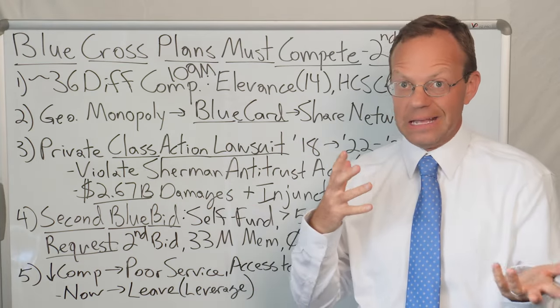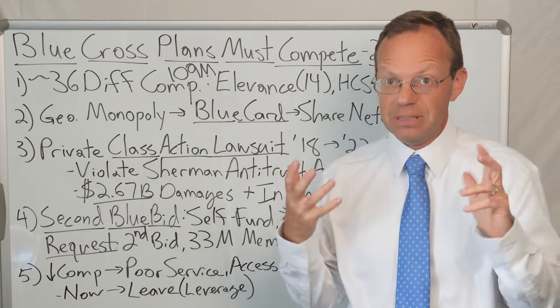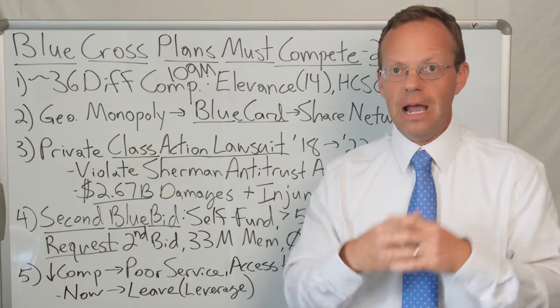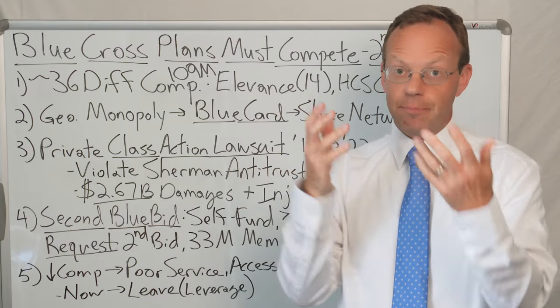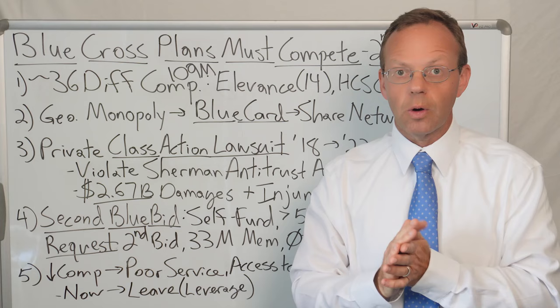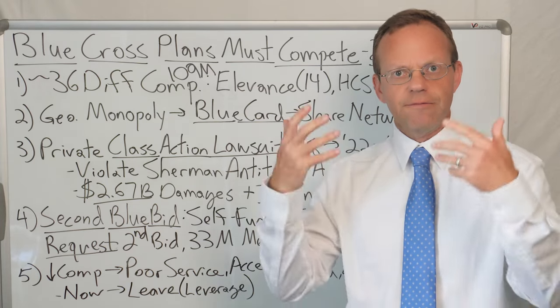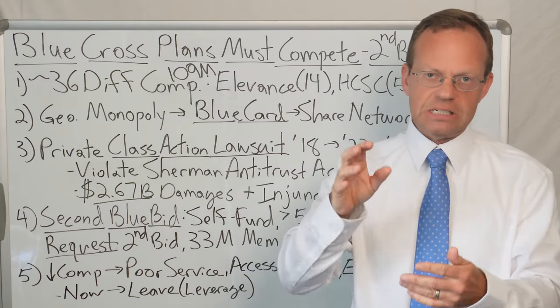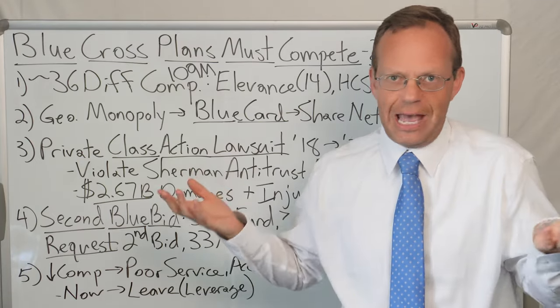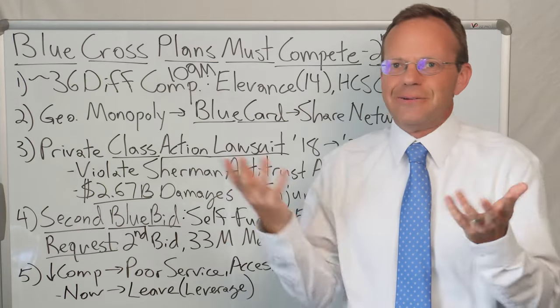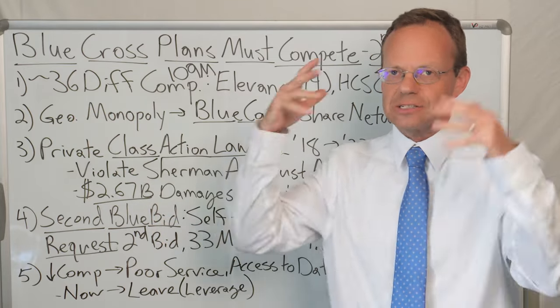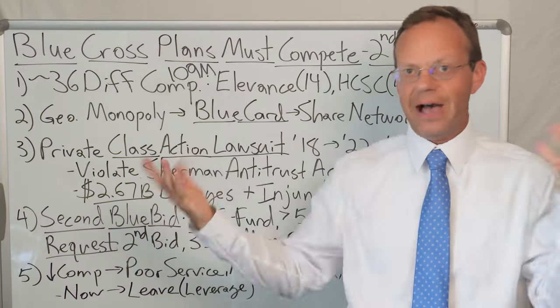There's also Blue Cross plans that have different names, but they're for the state. So Wellmark is for the state of Iowa. Highmark is in Western Pennsylvania, Delaware, West Virginia, and parts of Western New York. Then there's CareFirst, which does Washington, D.C., and parts of Maryland and Virginia. And then there's Capital Blue Cross, which is not for the nation's capital, it's for parts of Pennsylvania. So it's incredibly confusing. But there's 36 different Blue Cross plans that are separate companies that have essentially divided up the country.